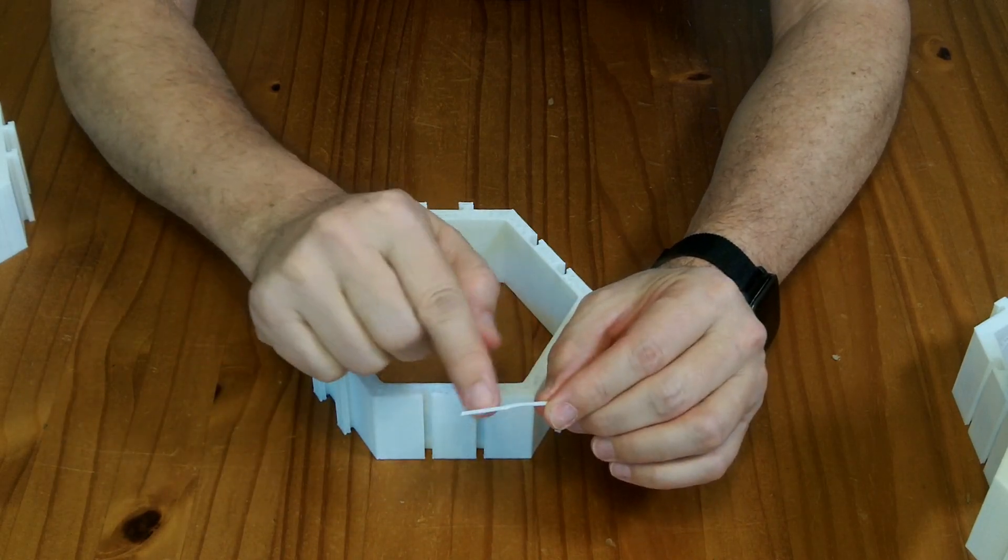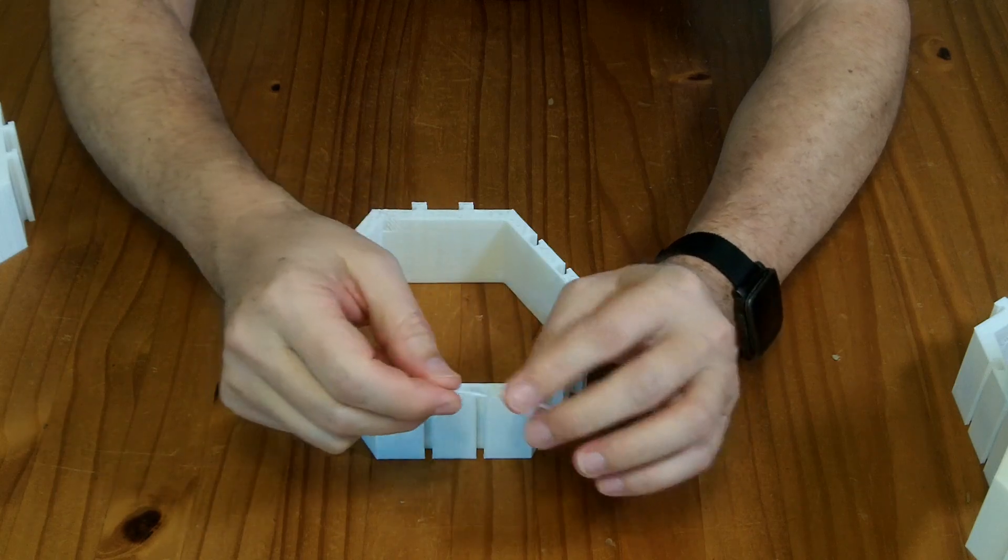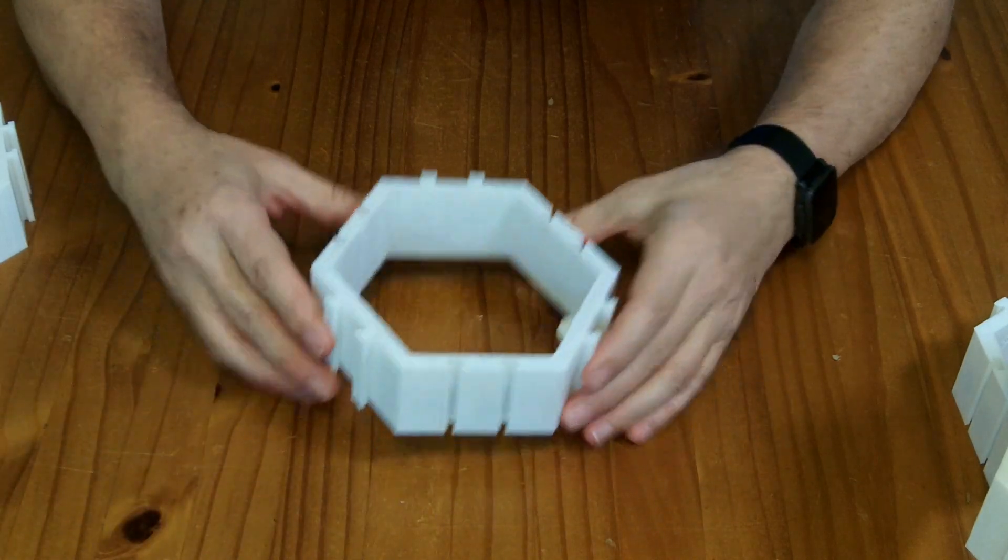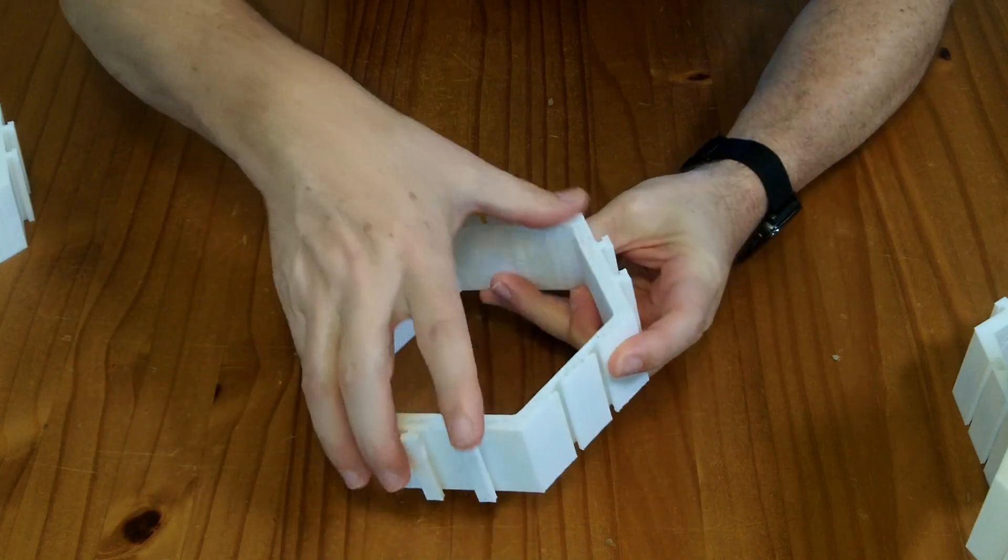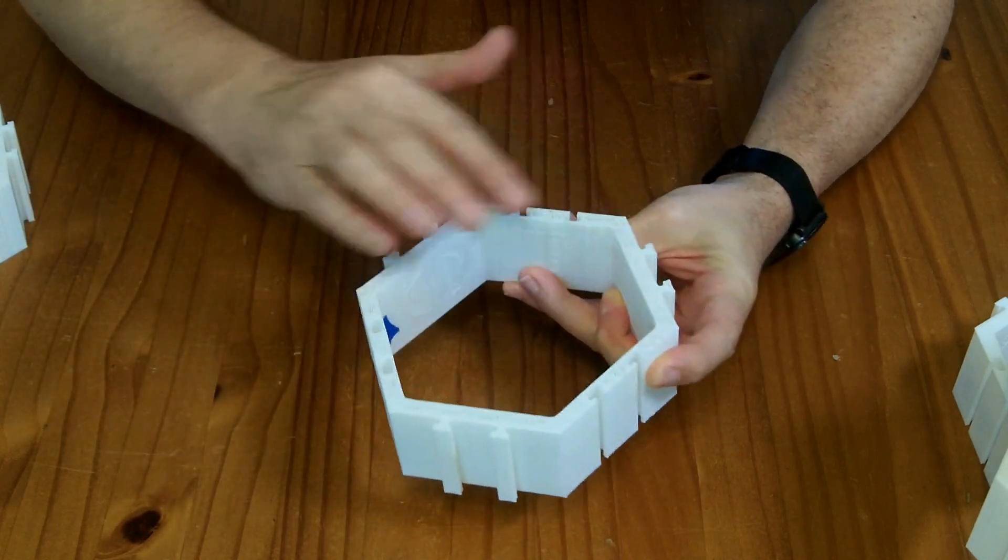It looks like the gear was kind of grinding the filament and ground it smooth and didn't really put a whole bunch out. It was kind of going slow. And so at the top layer here, it's under extruded.